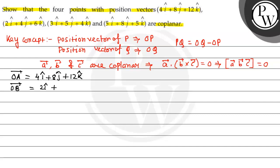And OC vector is 3i + 5j + 4k, and OD vector is 5i + 8j + 5k. Now we will calculate the position vectors.